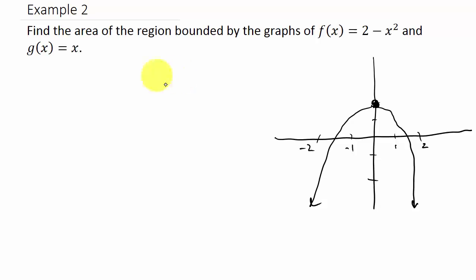Now let's graph g(x) = x. Well we know it goes through the origin (0, 0). Then I can use rise over run to get my next point. And so that's going to look something like this. And the area I'm looking for is right here.